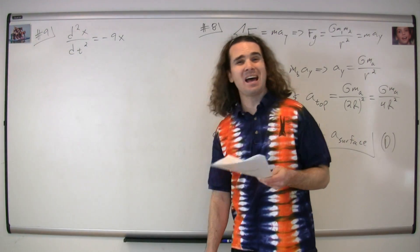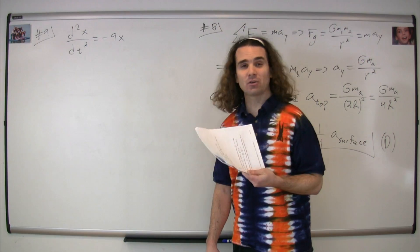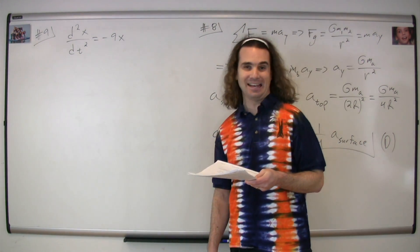Question number nine. We are given the equation for an object in simple harmonic motion, the second derivative of the position with respect to time is equal to negative 9x.